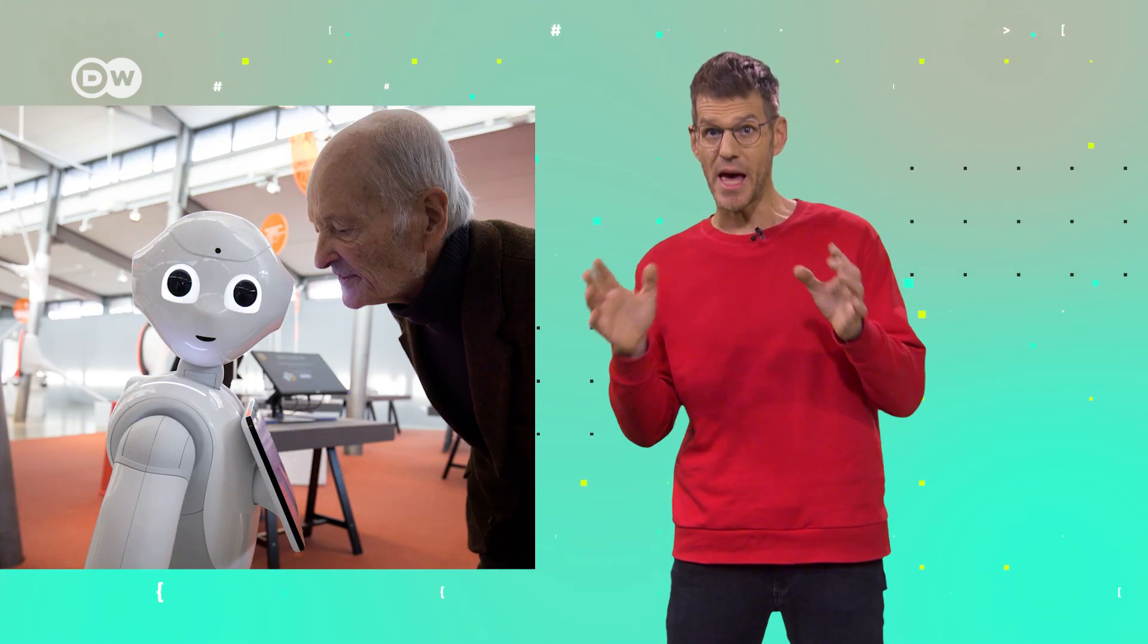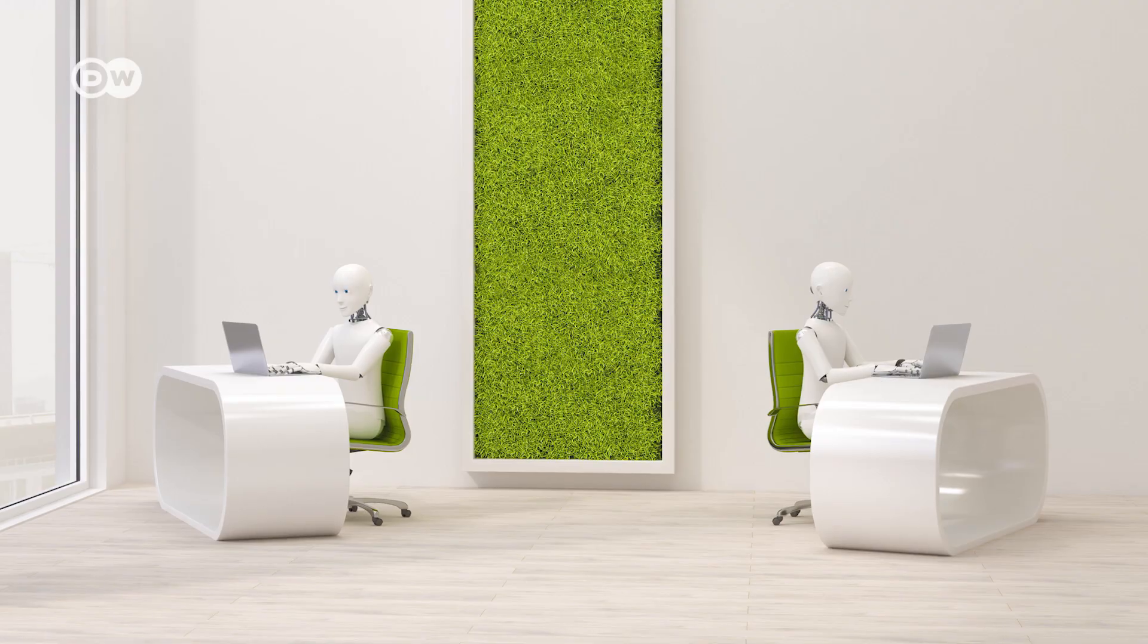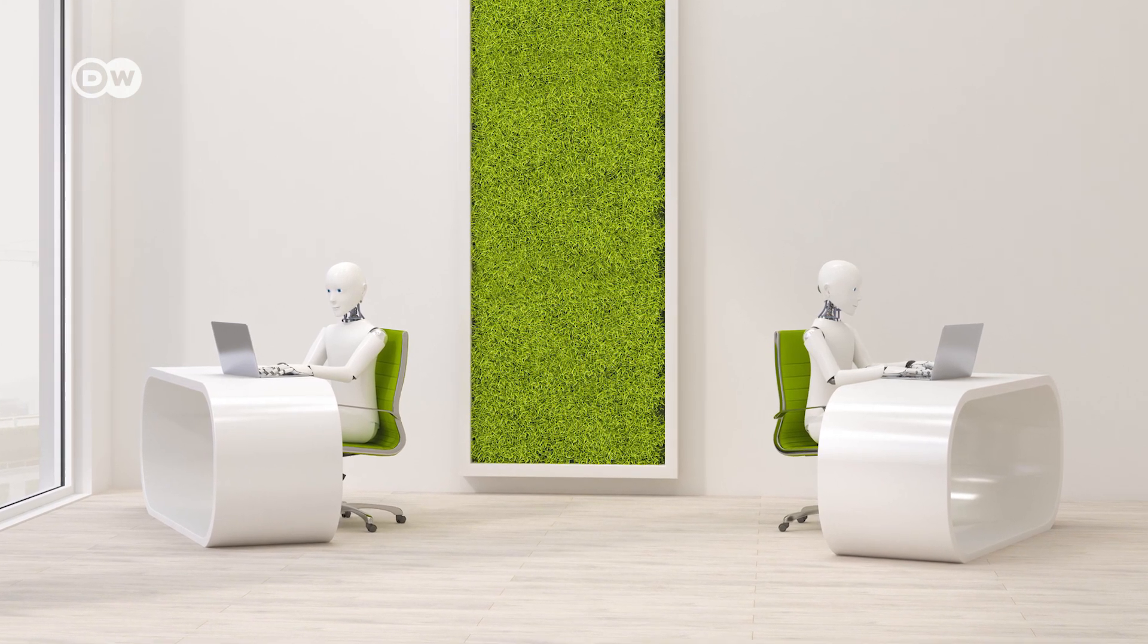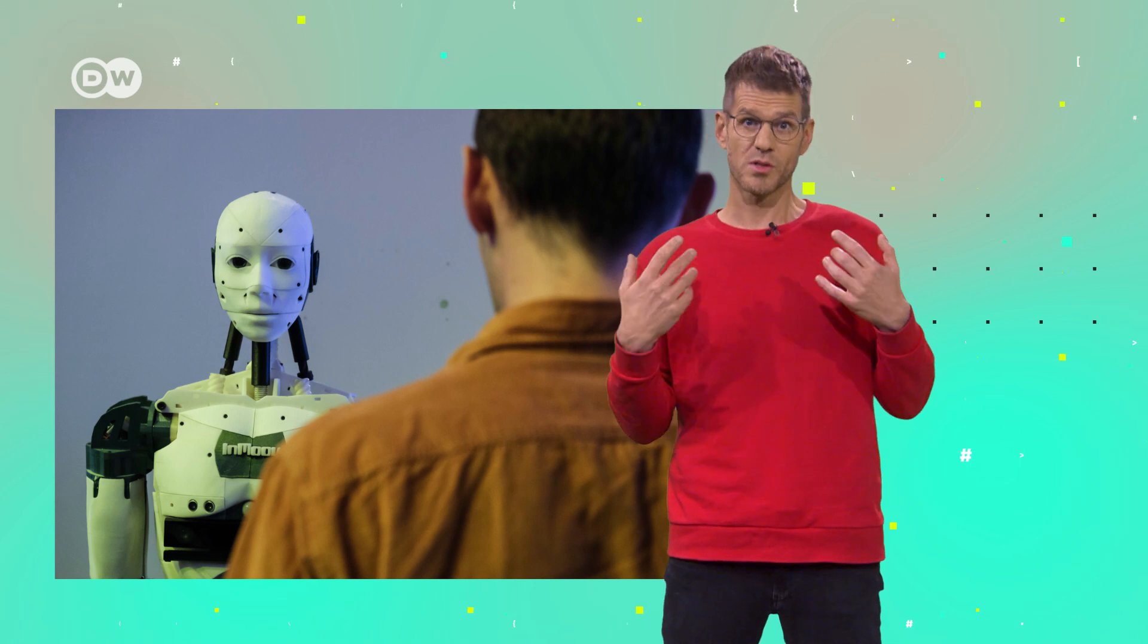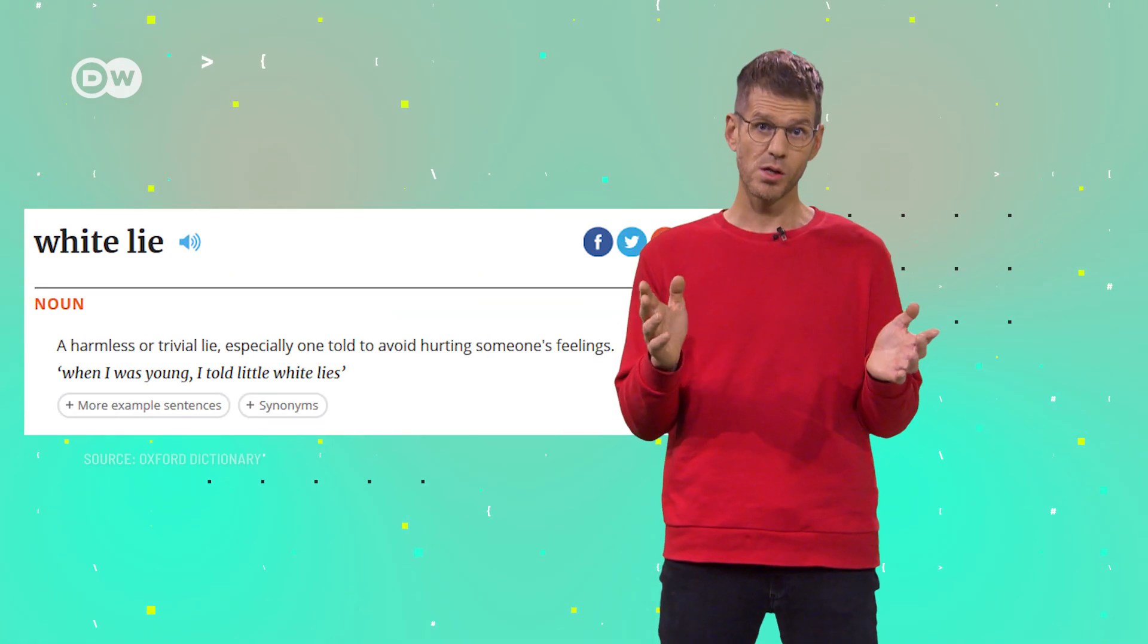Scientists work hard to develop robots that can lie. And it's a talent they will need. The future goal is for AI assistants to help us in any situation in life and to become good colleagues at work. To achieve this, they will have to do something that we do most of the time subconsciously. We tell little harmless lies to brighten the mood. They are called white lies.